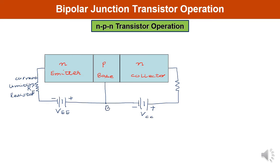This is the base terminal, this is the emitter, and this is the collector. There is also a current-limiting resistor denoted by RC. The emitter-base junction must be forward biased, and the collector-base junction must be reverse biased.